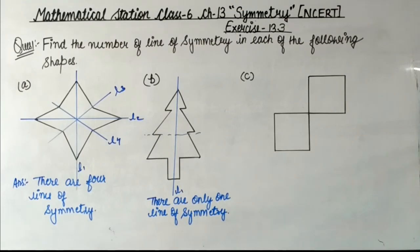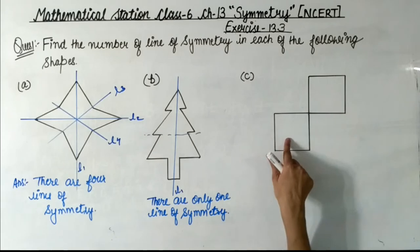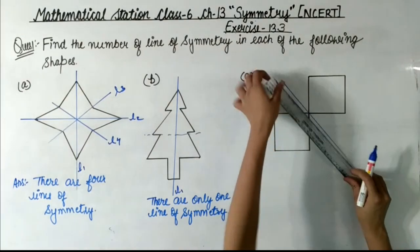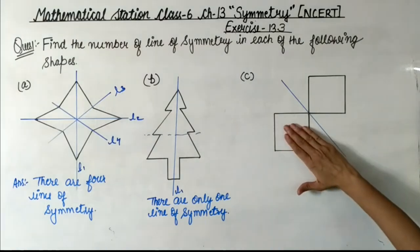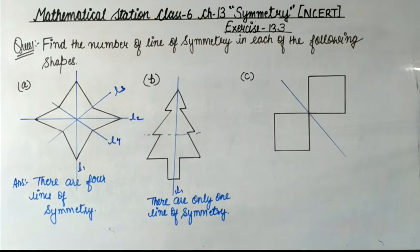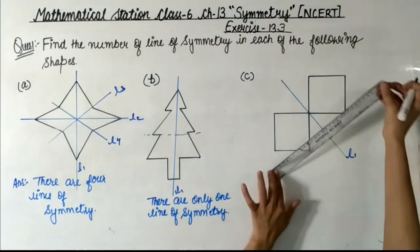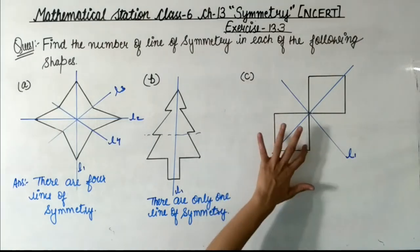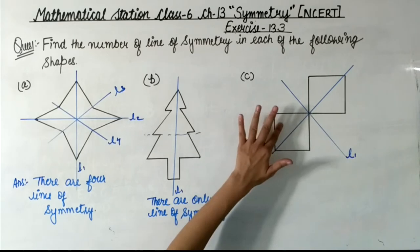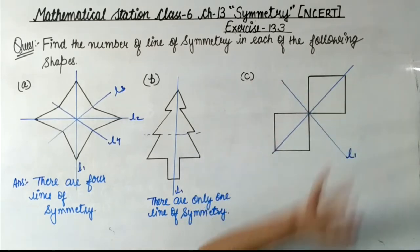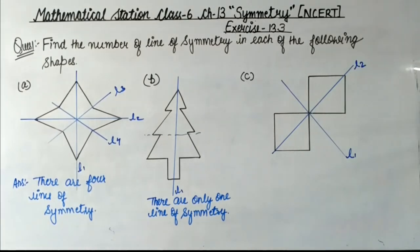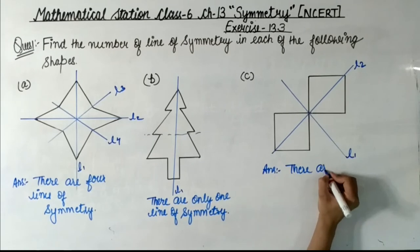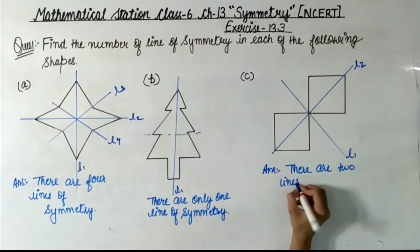Now next is Part C. In Part C there are two square boxes joined together, one above and one below. The first line L1 is drawn between them — when we fold, the squares overlap exactly. The second line L2 is drawn diagonally, dividing each square into two triangles that also overlap. So we can draw two lines of symmetry, L1 and L2.